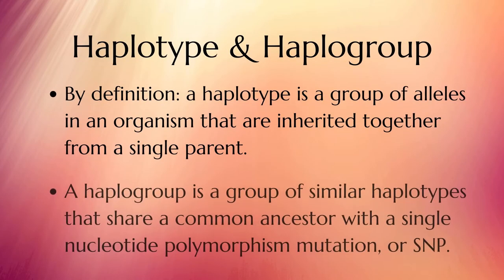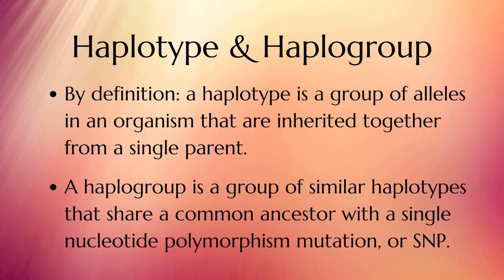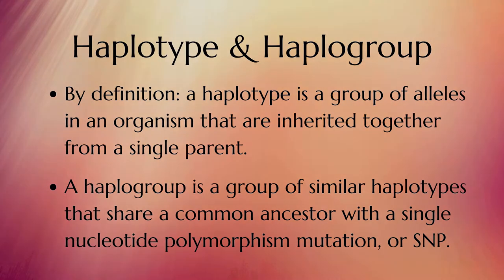By definition, a haplotype is a group of alleles in an organism that are inherited together from a single parent. A haplogroup is a group of similar haplotypes that share a common ancestor with a single nucleotide polymorphism mutation.